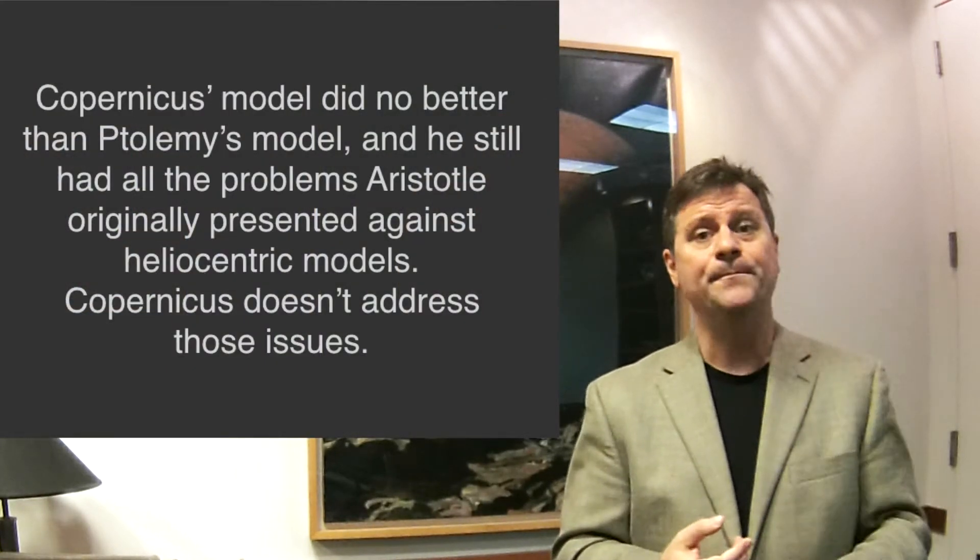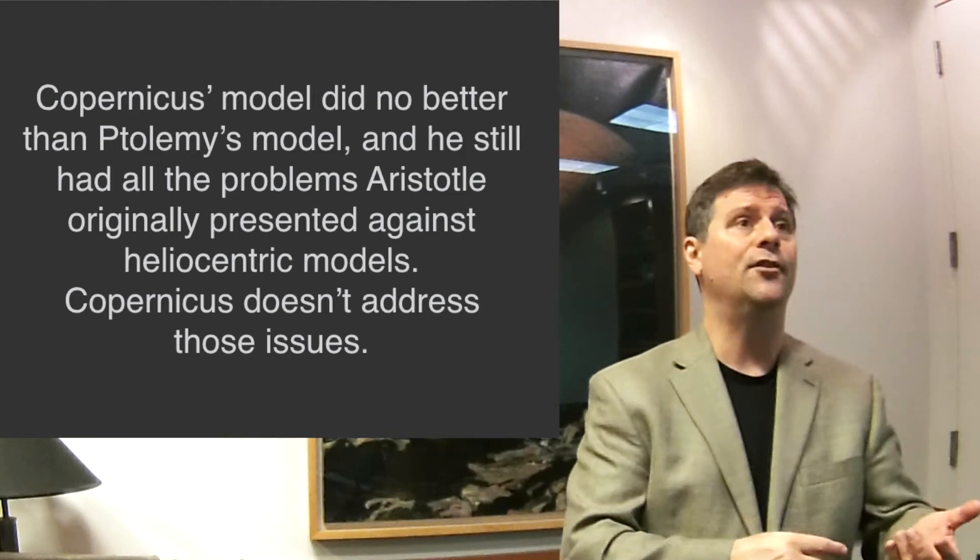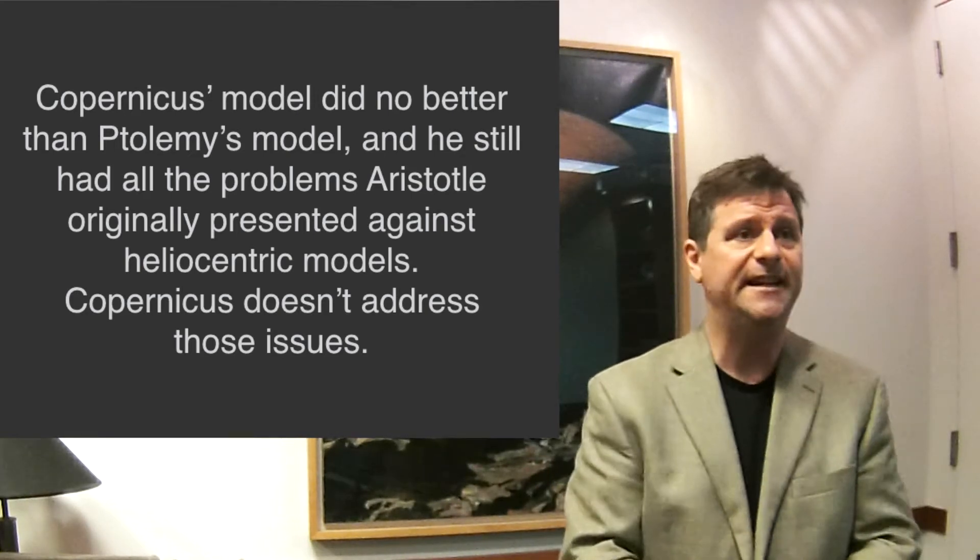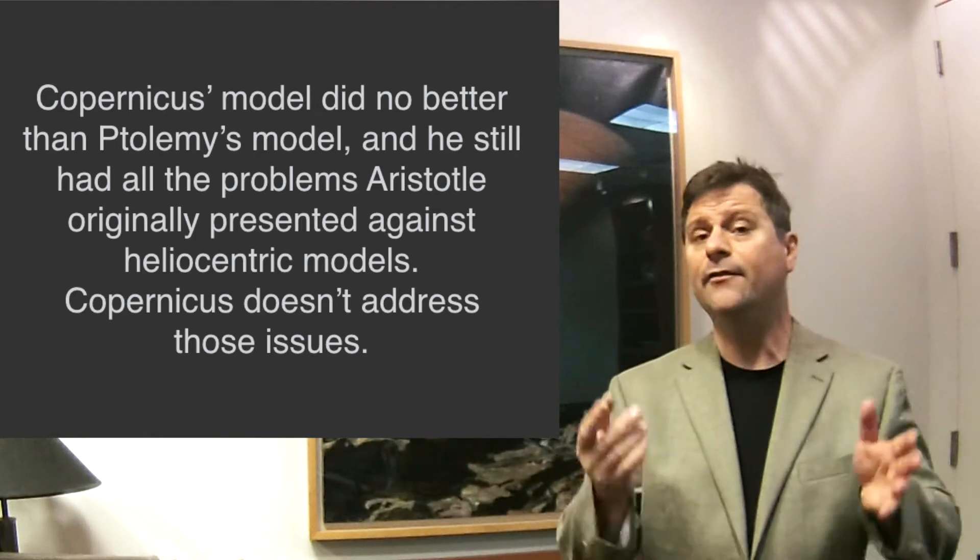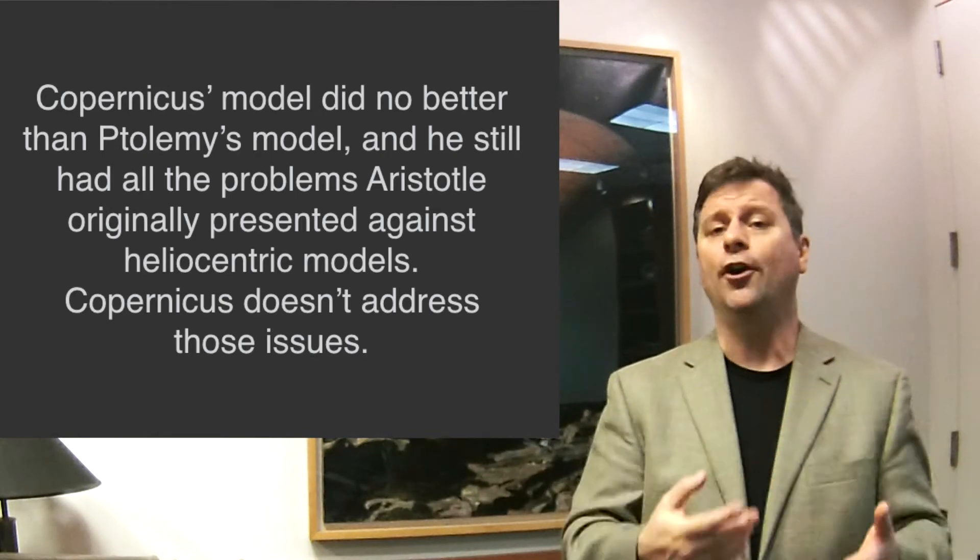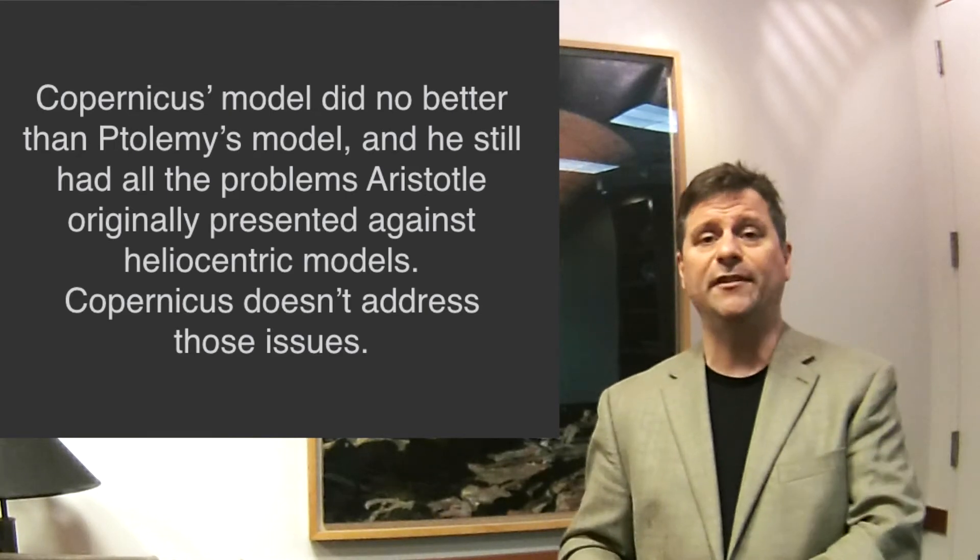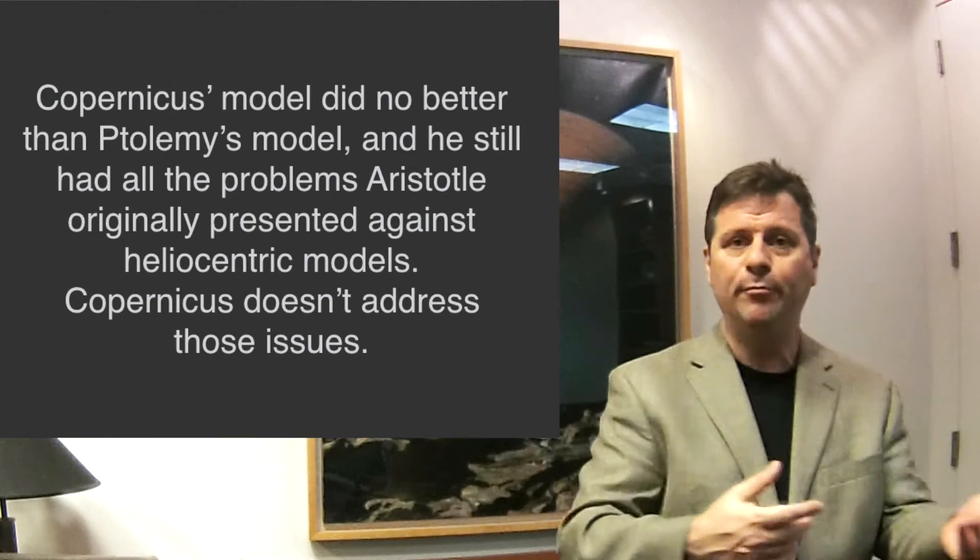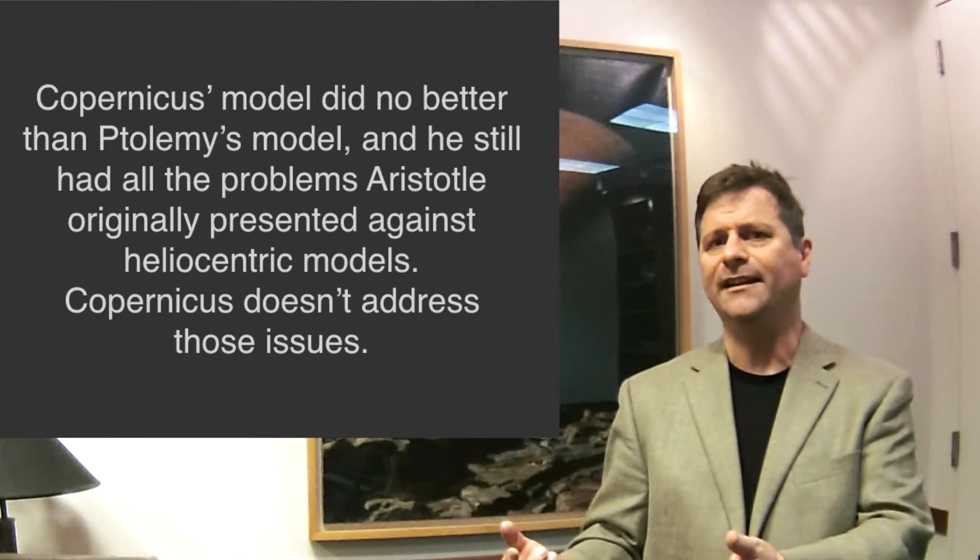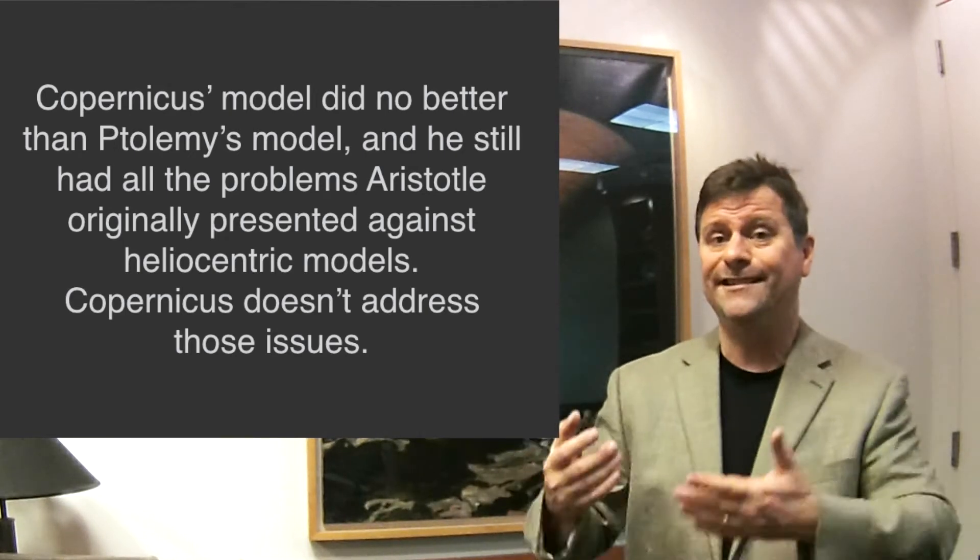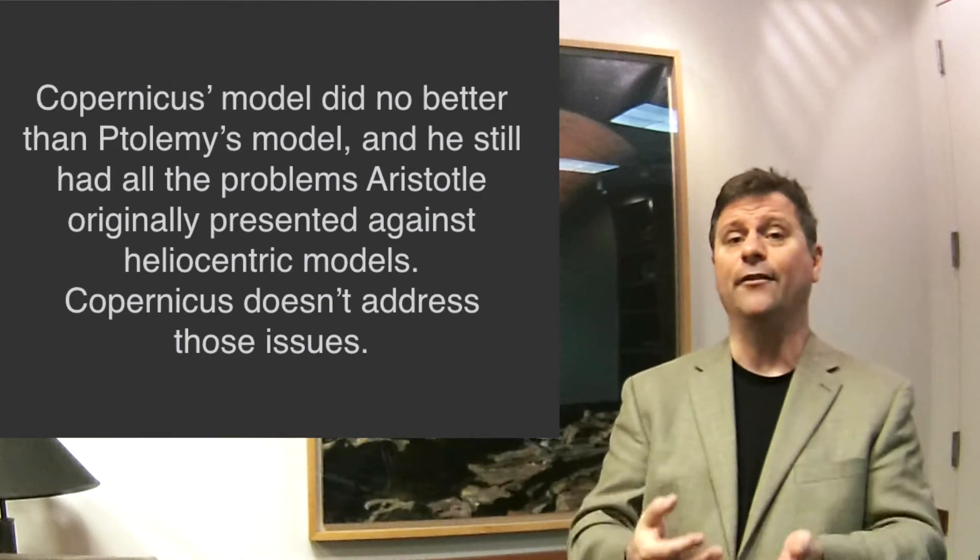And there was still the problem of the winds, of all the parallax that wasn't seen. All these things that Aristotle said that were arguments against the motion of the earth. Now Copernicus just simply said, hey, the mathematics works. I've gotten rid of the equants, but it's just as complicated as Ptolemy's. And it doesn't explain away Aristotle's arguments. This is a problem. So people weren't really thrilled with Copernicus's model. And people had problems with it when they advocated it.